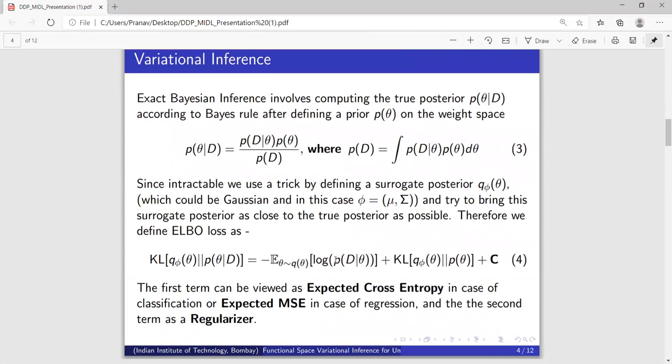Now exact posterior cannot be computed again. So we have to rely on another trick which is basically define a surrogate posterior and bring it close to the true posterior in the KL divergence sense.